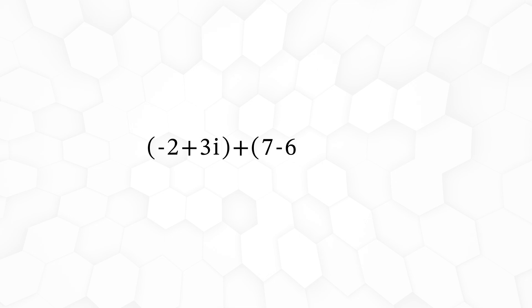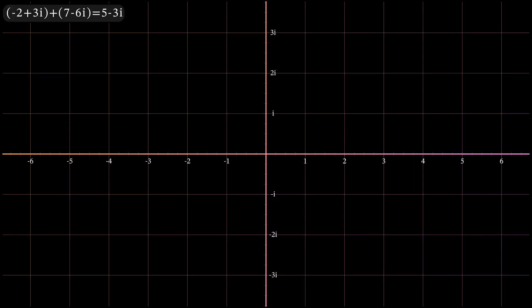Let's try one more. Minus 2 plus 3i, plus 7 minus 6i, equals 5 minus 3i. Visually we start at minus 2 plus 3i, then our spot transforms 7 units to the right and 6 units down.